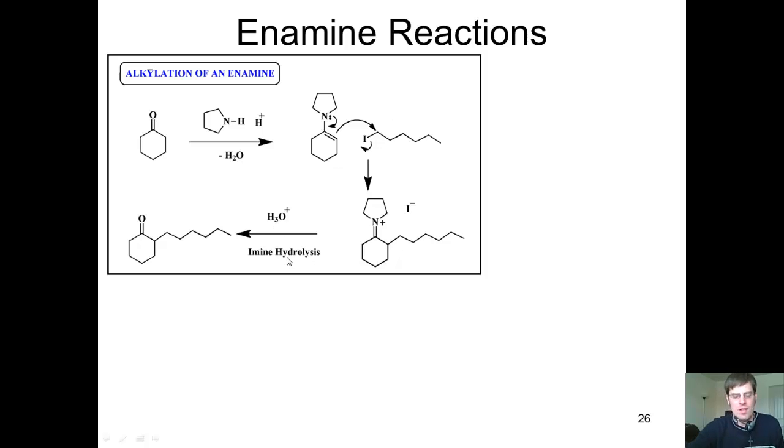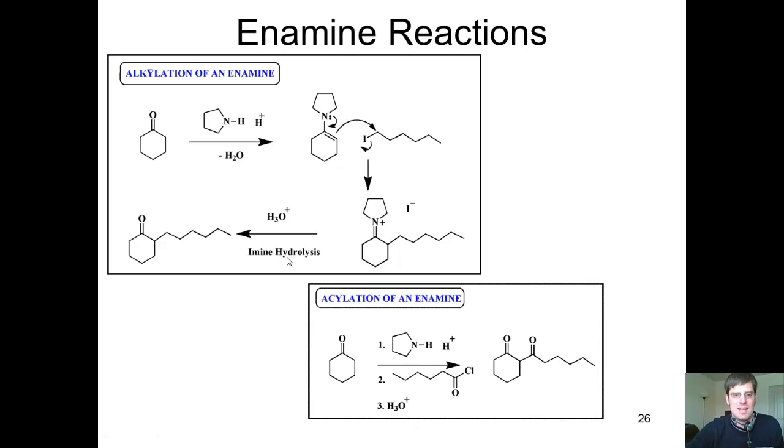That was a very long sentence, but here is another example. I can take my ketone, treat it with this amine. It will generate the imine and then the enamine, which are not shown here, and then I can react that with this acid chloride, and it will acylate this group. After I treat it with acid, it hydrolyzes off the amine and gives me back my ketone. I think that's pretty cool.